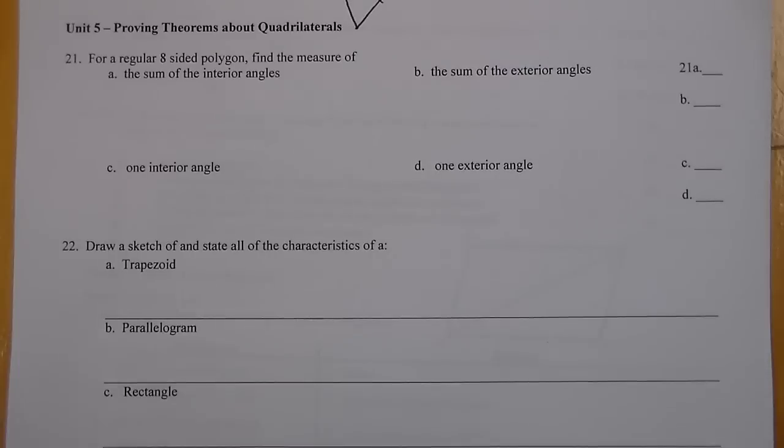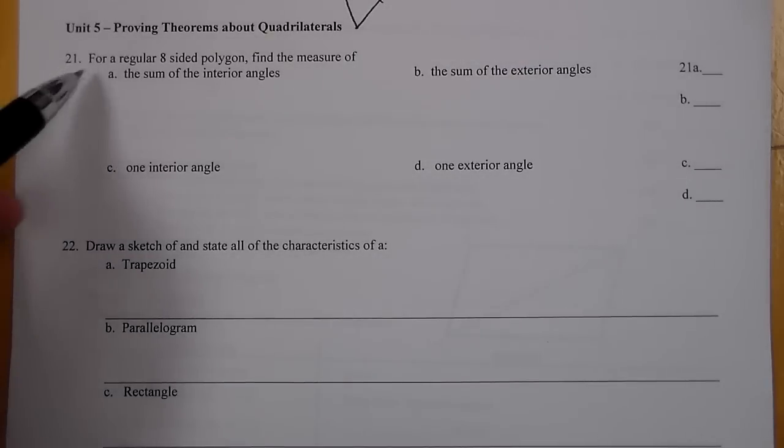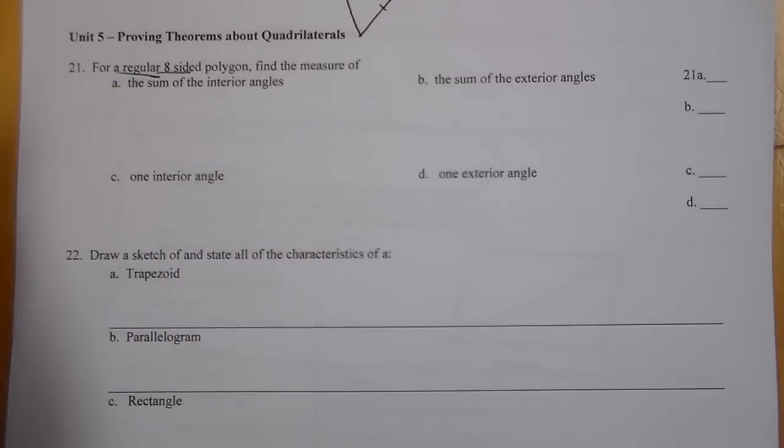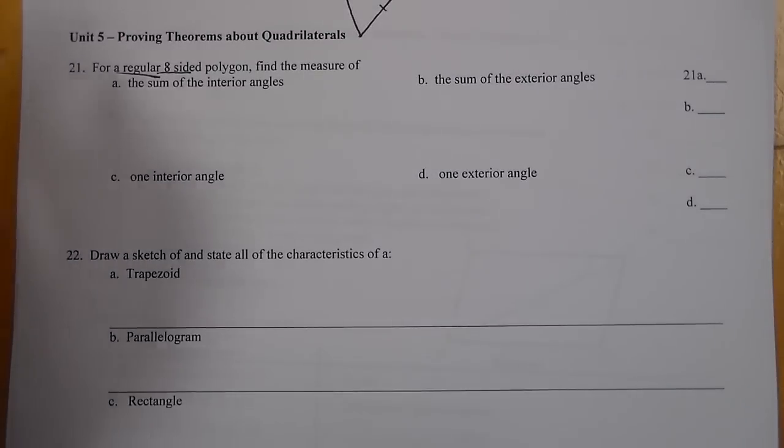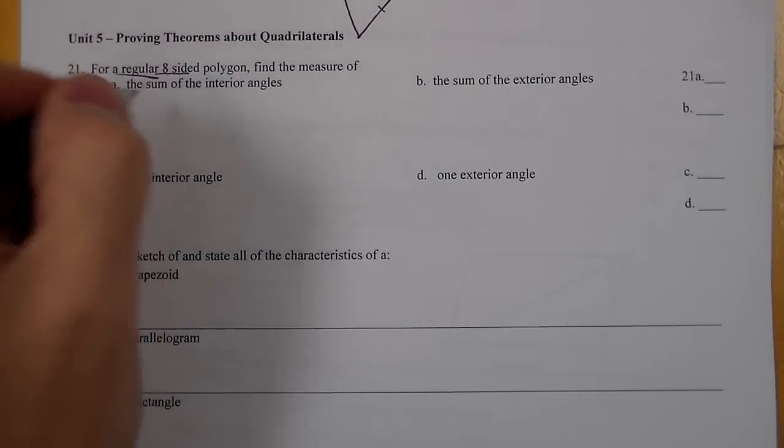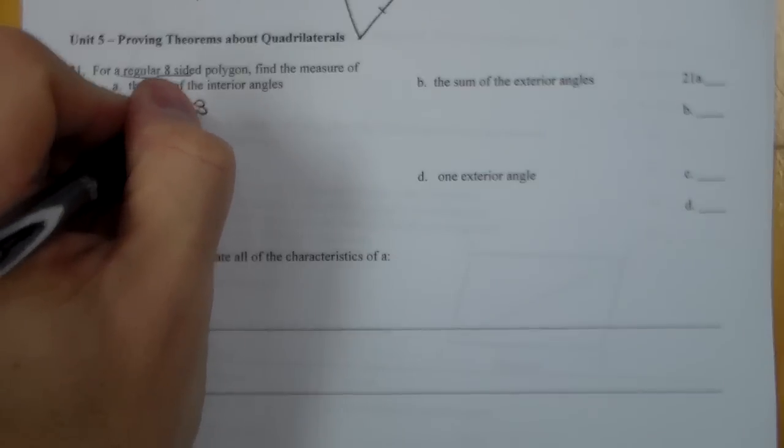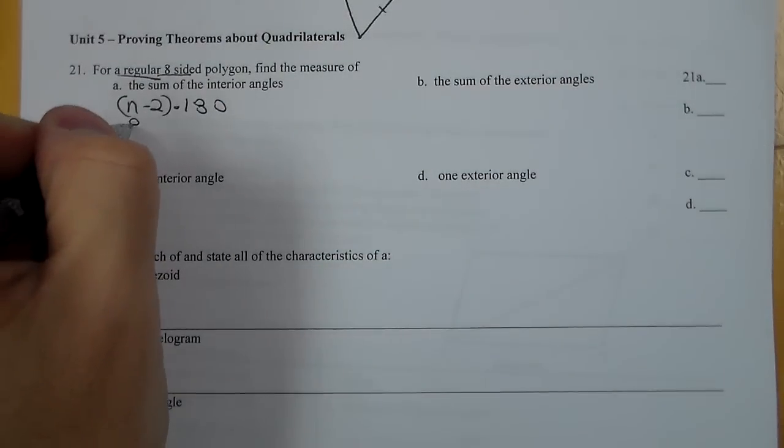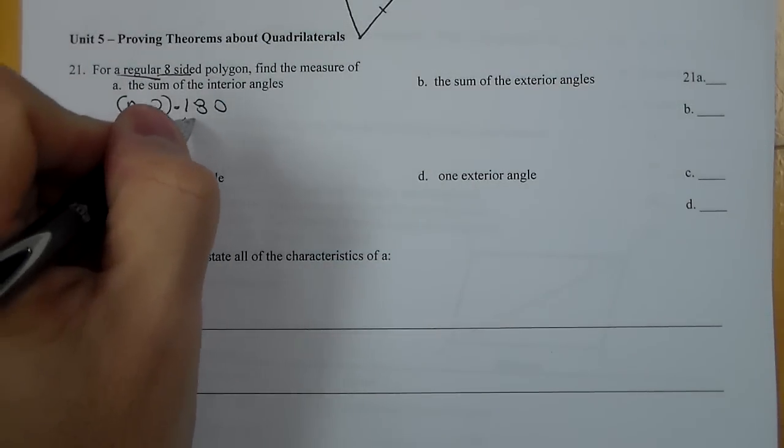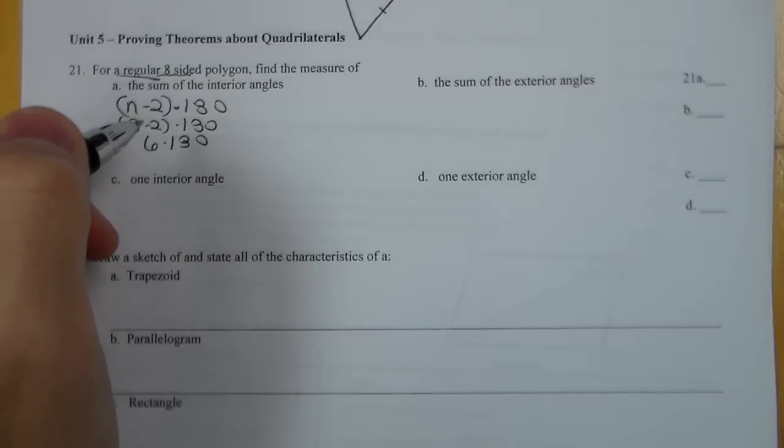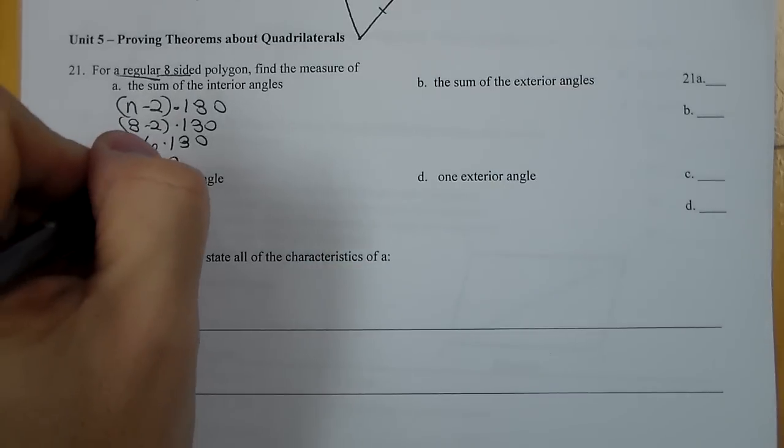This is the chapter 5 final review for Math 2 and Honors Math 2. For number 21, we're given a regular eight-sided polygon, so we know it has eight sides, all sides are the same, which means all angles are the same. We first need to find the sum of the interior angles. Our rule for the sum of the interior angles is n minus 2 times 180, so we do 8 minus 2 times 180, or 6 times 180, to get 1080.